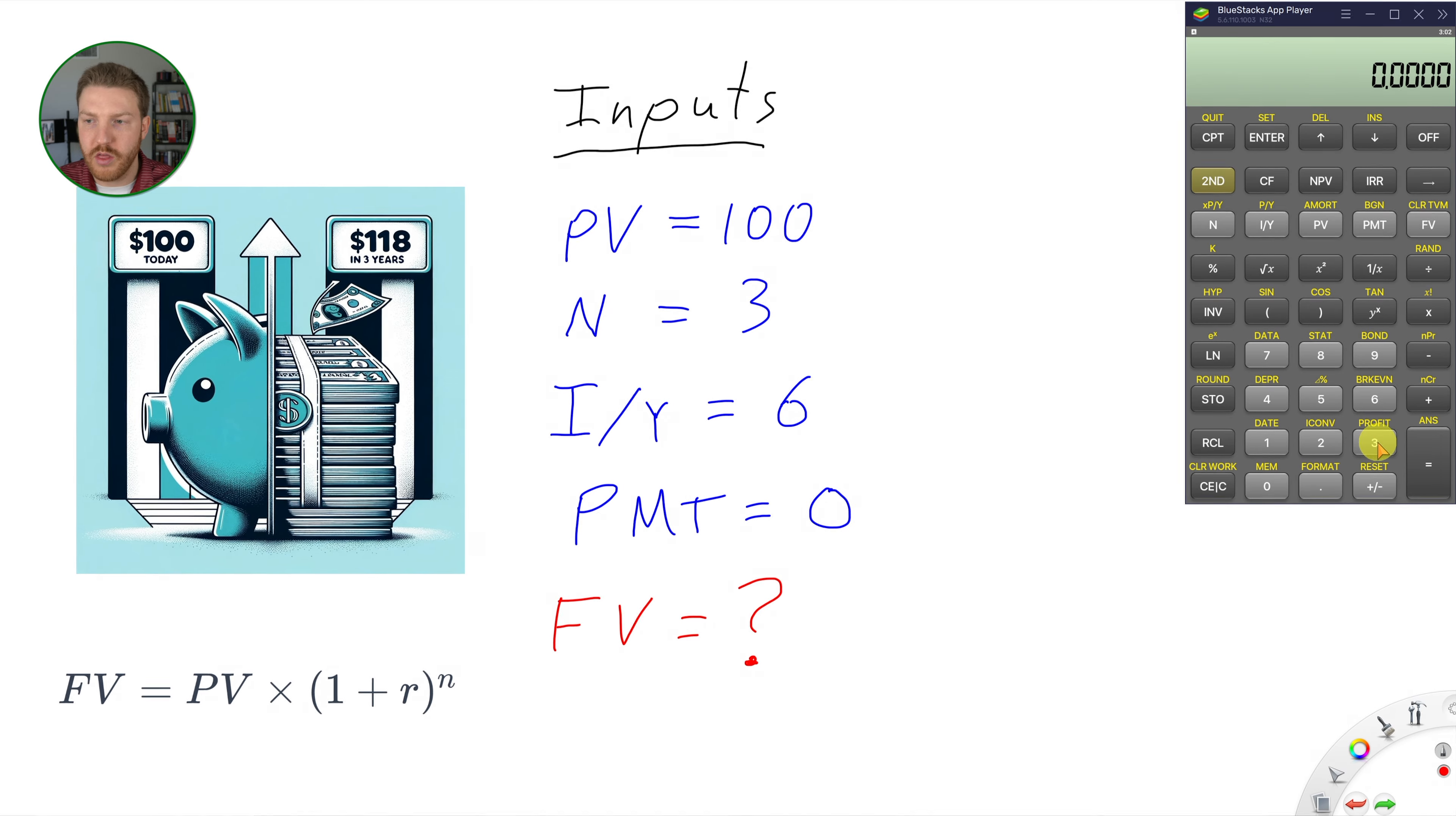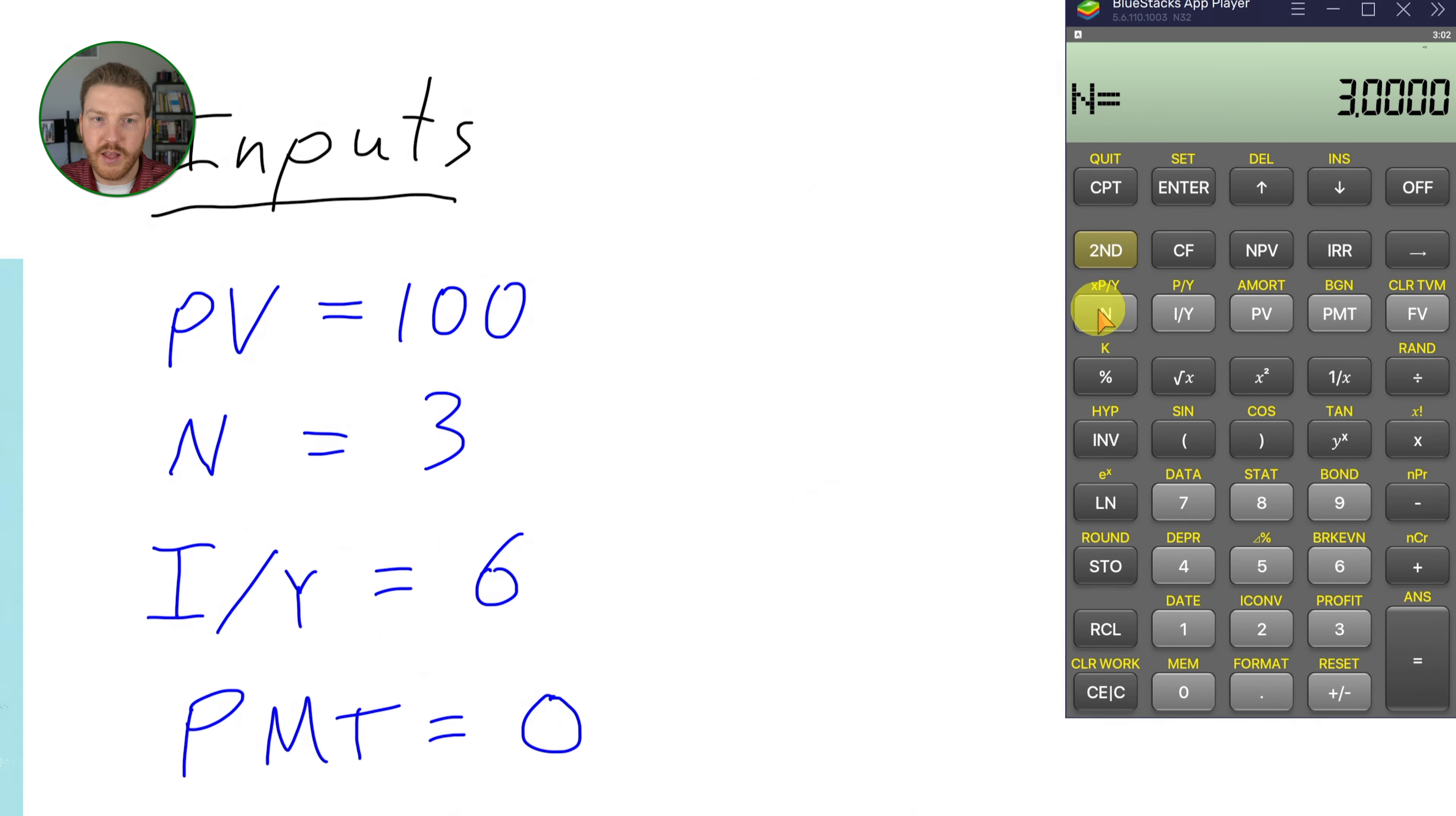So we know three is our number of years, and then our interest per year, IY, is 6%. So let's hit six, and then interest per year. Our present value is $100.